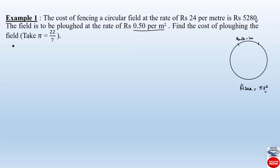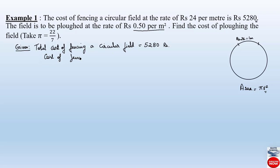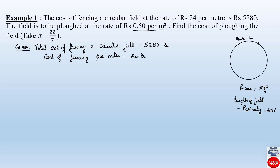Let us write down what is given: total cost of fencing the circular field is rupees 5,280, and cost of fencing per meter is rupees 24. The length of the field can be determined by dividing the total cost by the per-meter cost. The length of the field is also given by the perimeter, and the circumference or perimeter of a circle is given by 2πr.